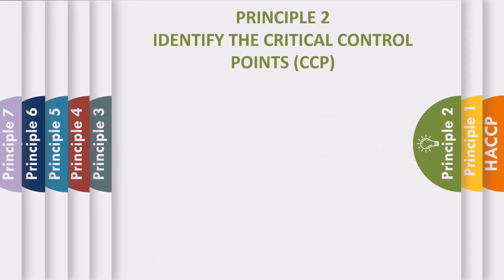Principle 2: Identify the Critical Control Points. A critical control point is any step in which hazards can be prevented, eliminated, or reduced to acceptable levels. Critical control points are usually practices or procedures which, when not done correctly, are the leading causes of foodborne illness outbreaks.